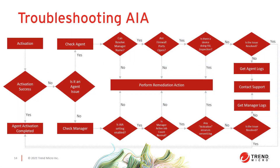In this troubleshooting flowchart, we start in the top left with kicking off the activation process from the agent. If activation is unsuccessful, we move on to determining if the problem exists from the agent side or the manager side. From the agent side, we first confirm that we can resolve the address of the manager — the computer where the agent is installed must be able to resolve the hostname of the manager. If DNS resolution is working normally, we must confirm whether communication from the agent to the manager is open. Using a utility like Test-NetConnection in PowerShell can help confirm this. The ports used for activation are 443 for Cloud One Workload Security, 4120 for on-premise, or whatever port was specified during installation. If communication is open, we need to ensure there are no network devices performing SSL inspection or interfering with encrypted communication between the two.